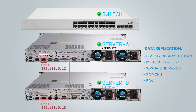In our example, server A is currently the primary server and is replicating data to the secondary server, server B. That replication is synchronous, which means that the application only sees I/O completion when it has completed on both servers. The two servers communicate over the secondary interfaces ETH1 on ports 3470 and 3471, and are connected directly via cable. Both secondary interfaces work on separate networks.